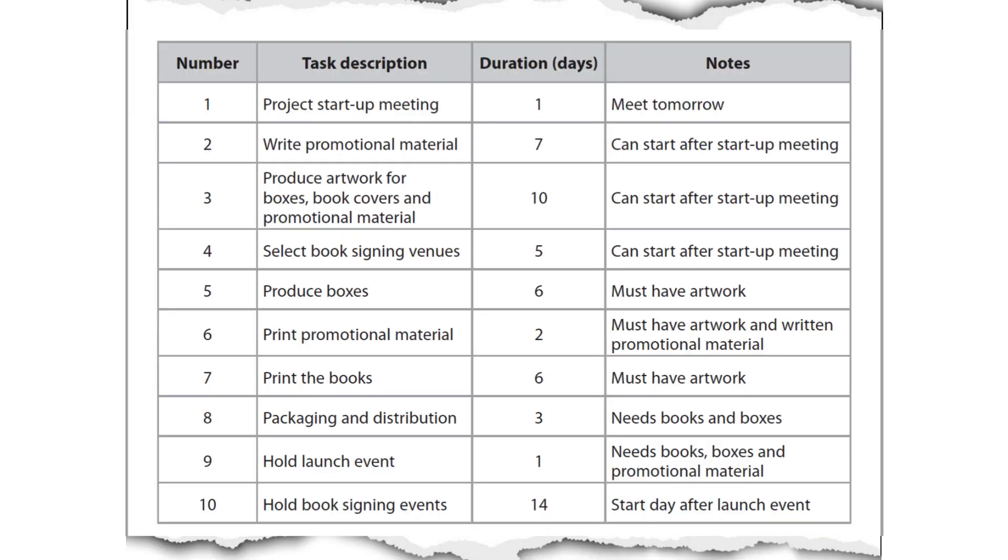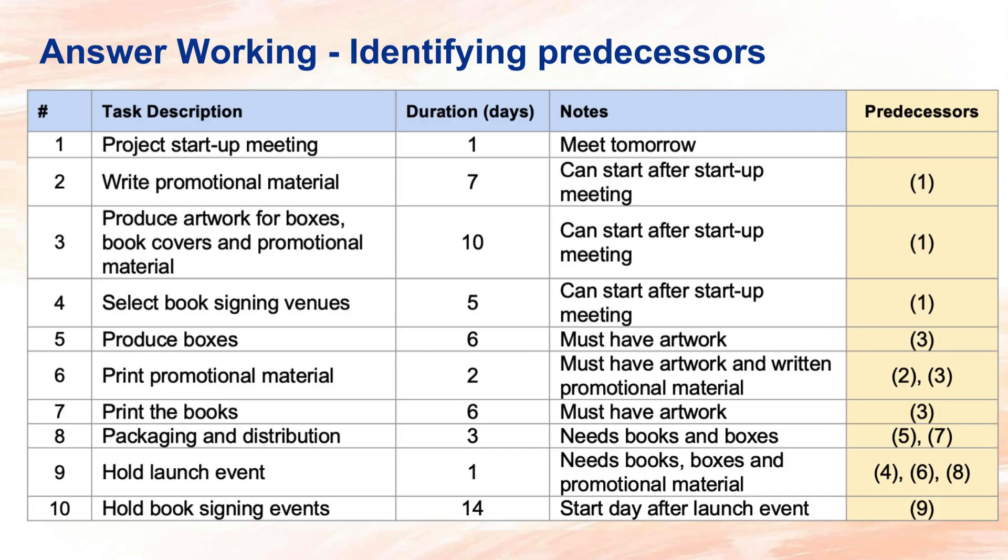This is the task list provided with the notes. As we did in the previous CPA lesson, let's write down the predecessors for each of the tasks. The starting task or activity is one, so we start drawing the CPA with that task starting from the start node. The ending task is 10, so the ending node of the CPA must be connected to task 10 ending. I fill the predecessors like so.